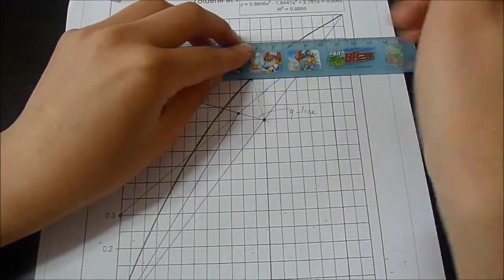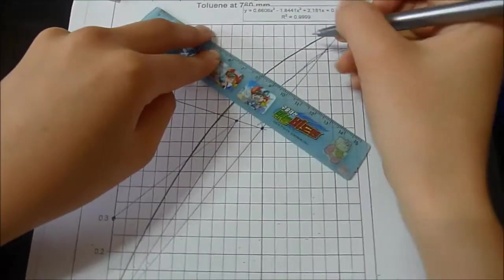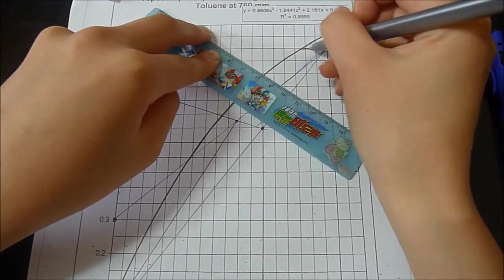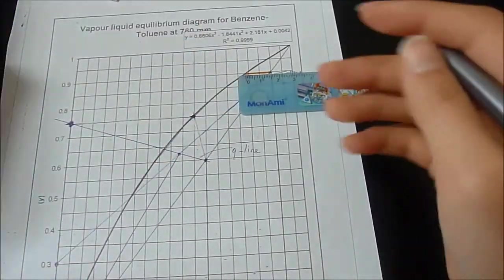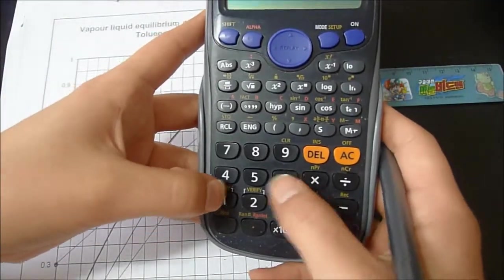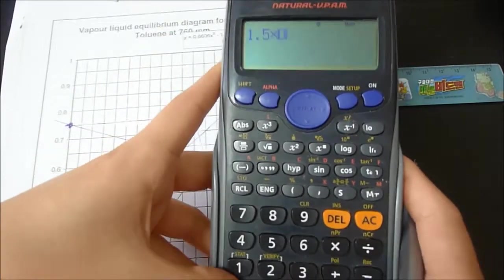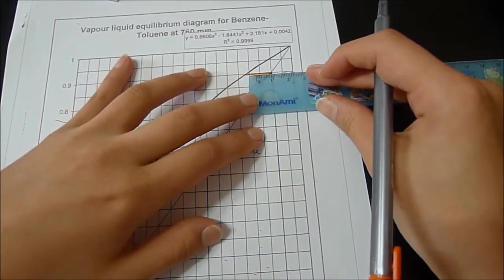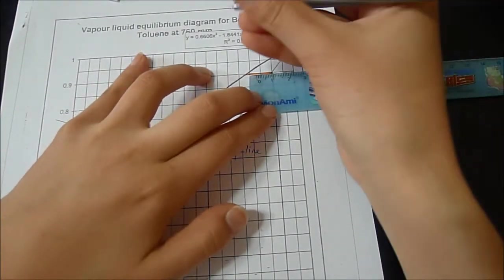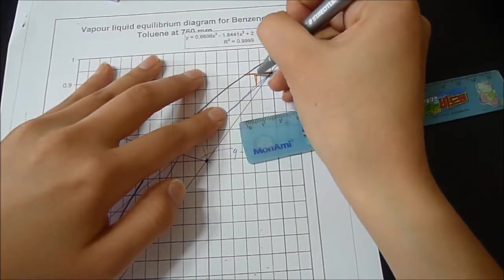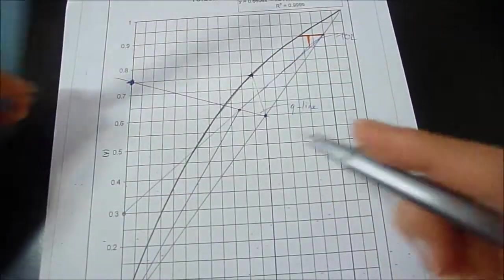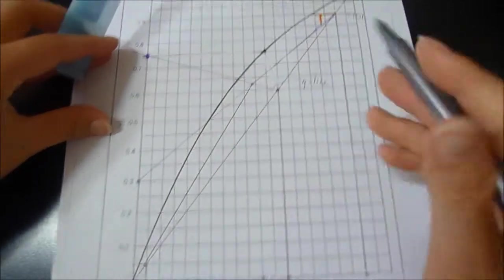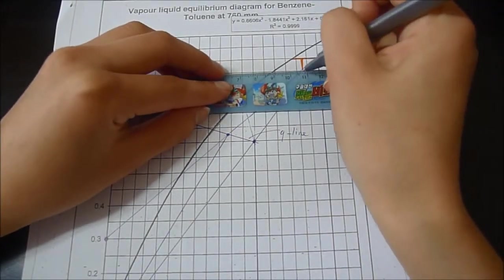We start from the top operating line. This is 100%, so let's see how many centimeters. 1.5, so 1.5 times 0.6 is 0.9. At 0.9, we go down around here, and we do this until we reach XW.